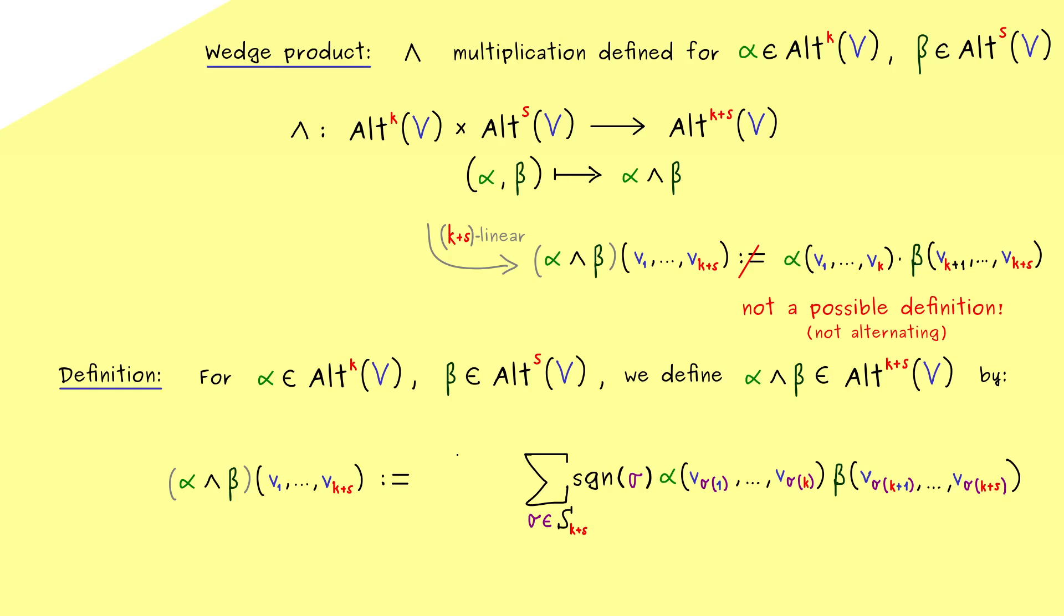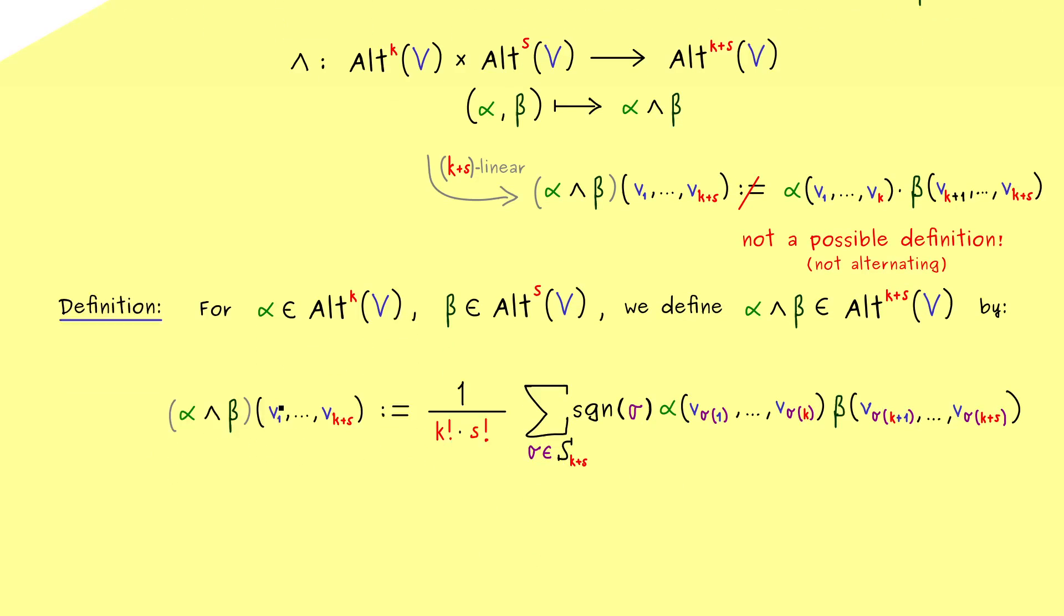So indeed, we have k factorial possibilities inside alpha and s factorial possibilities inside beta. And now we are finally done. This is the whole definition for the wedge product of alternating forms.